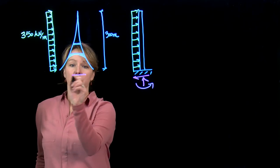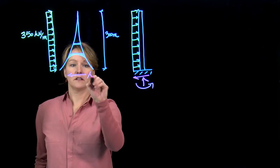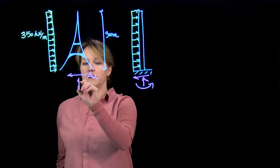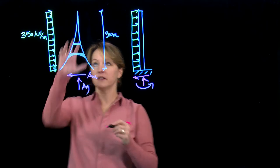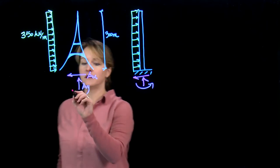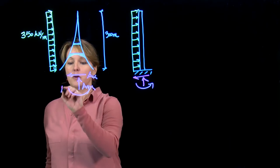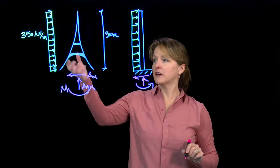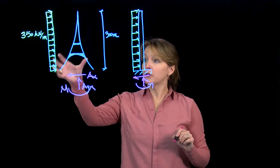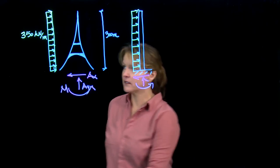So to counteract that wind force, I need a horizontal reaction, let's call that AX. I don't, for the wind load, have a vertical reaction. But obviously, for the weight of the Eiffel Tower, I would have a vertical reaction for a different load case. And I'll have a moment. So I need this moment to actually resist the wind load, resist rotation. So we can go through and we can solve for these reactions, and let's do that.